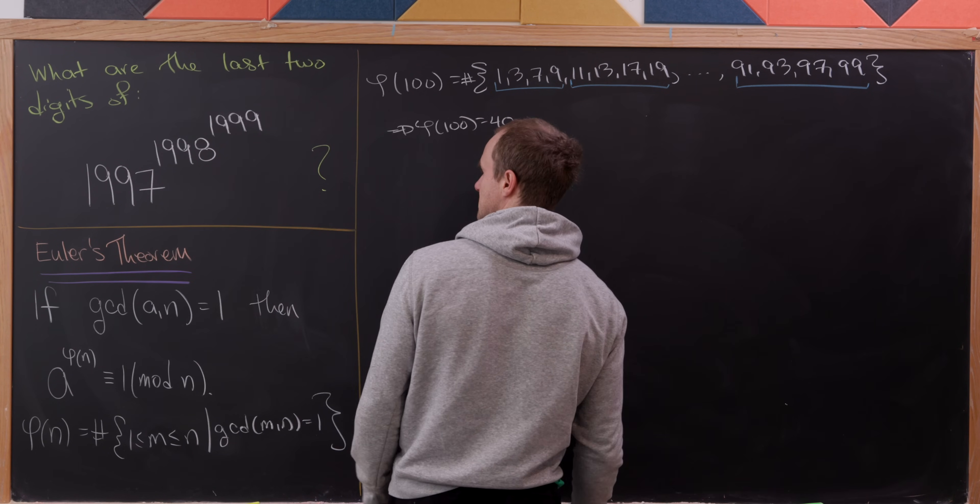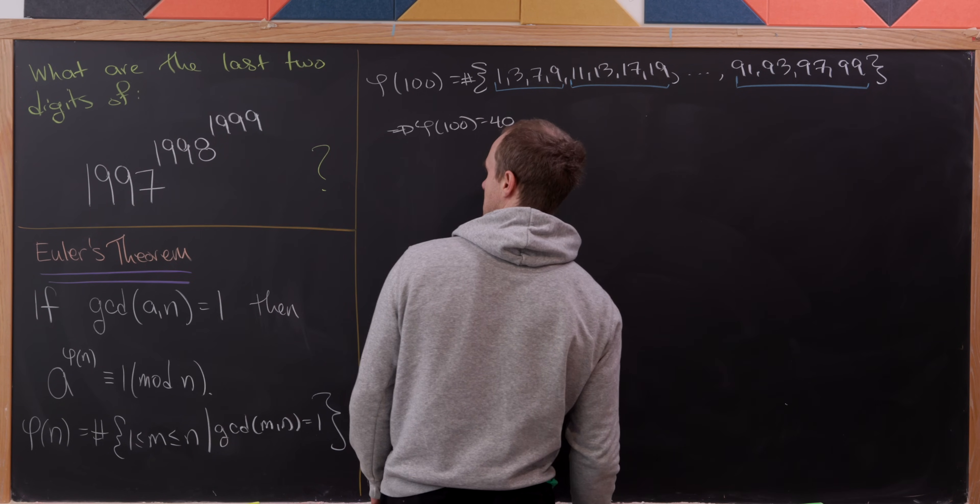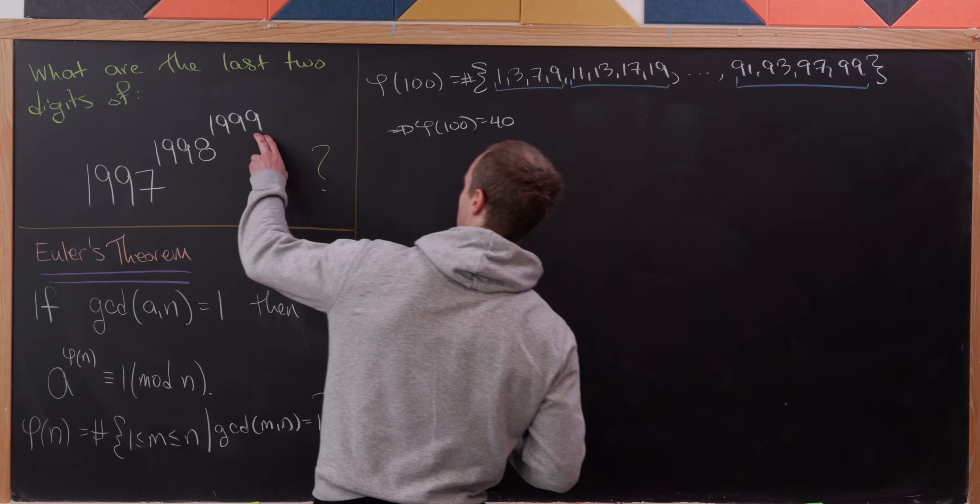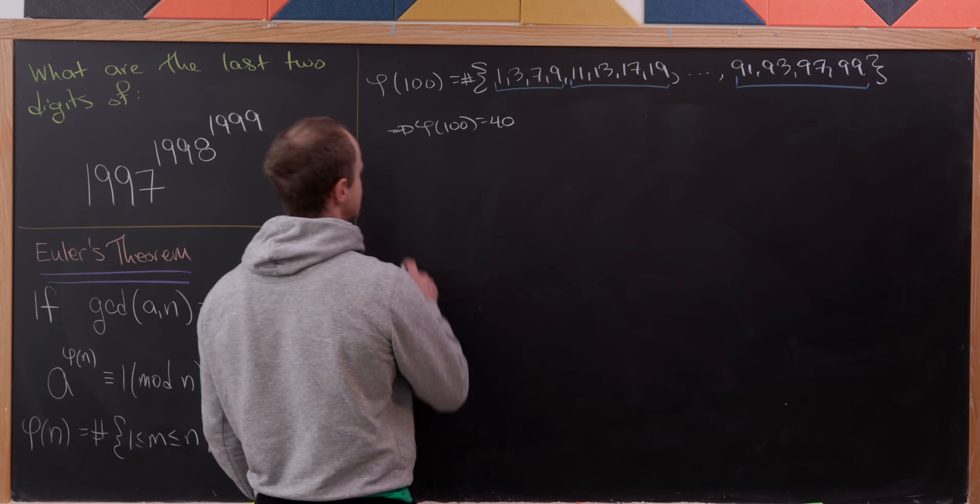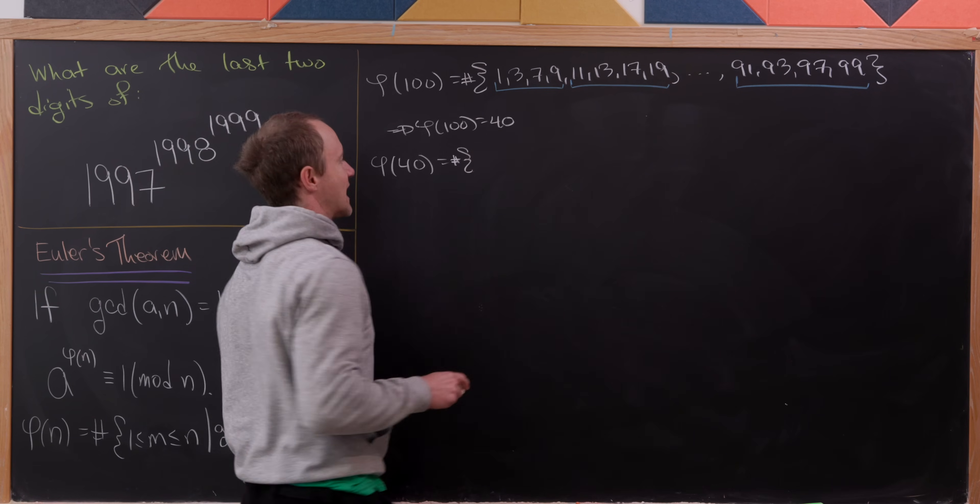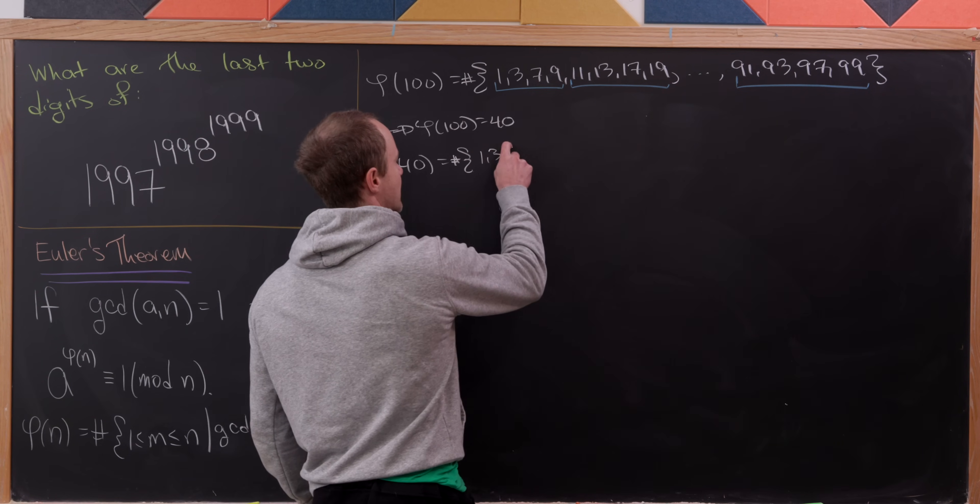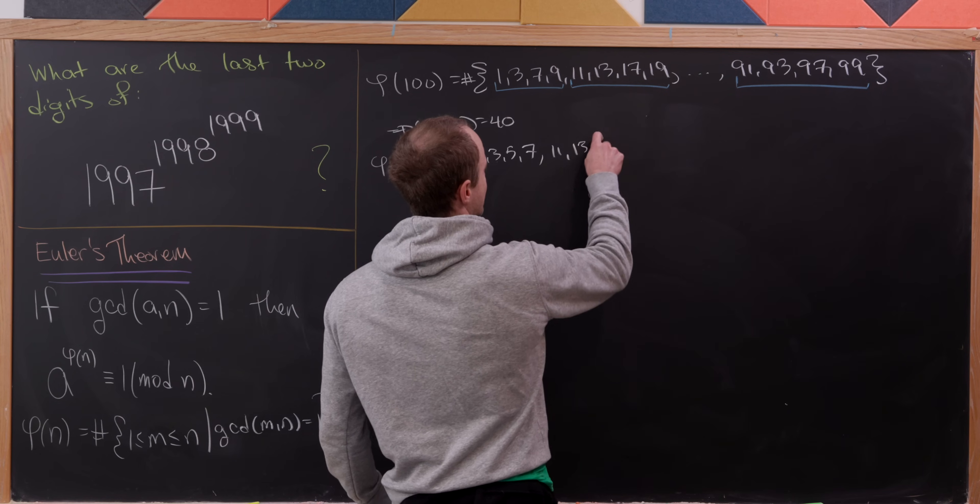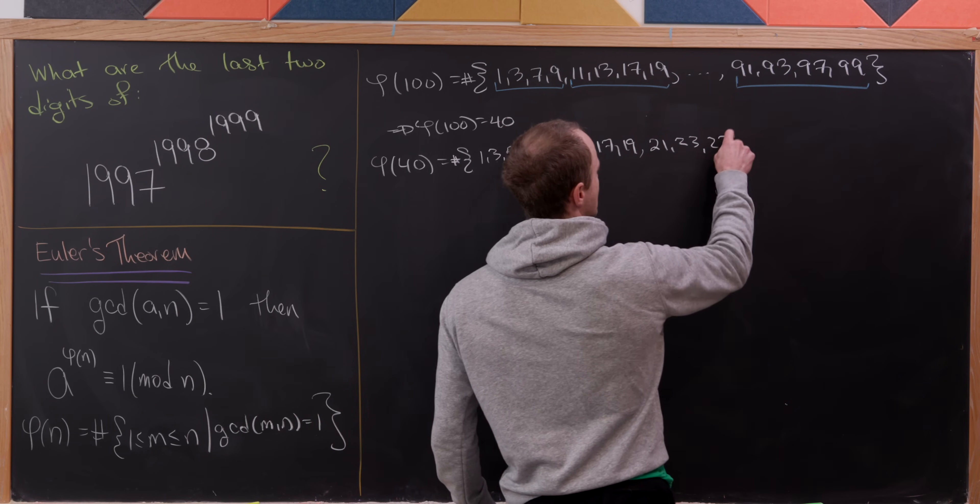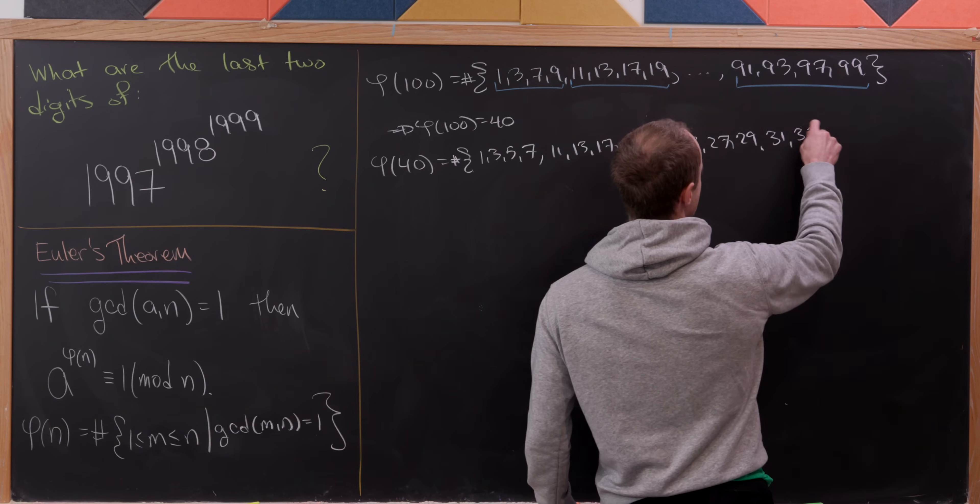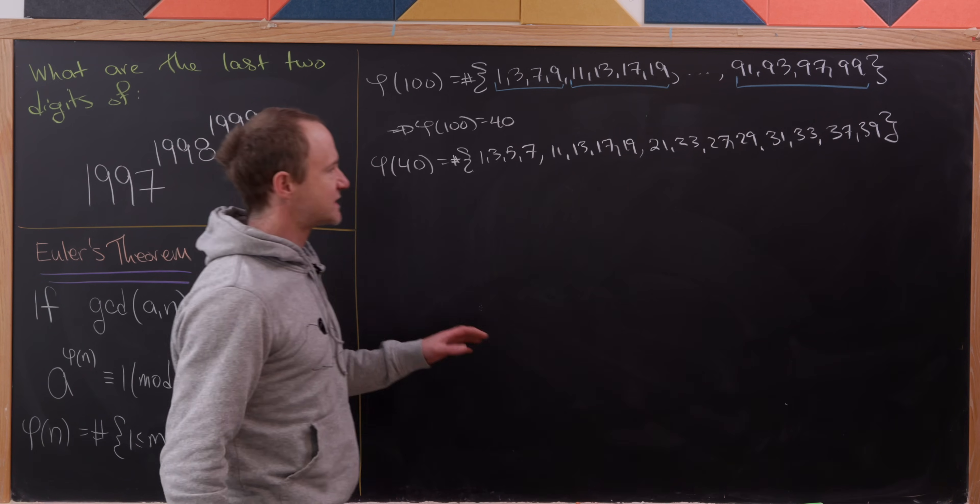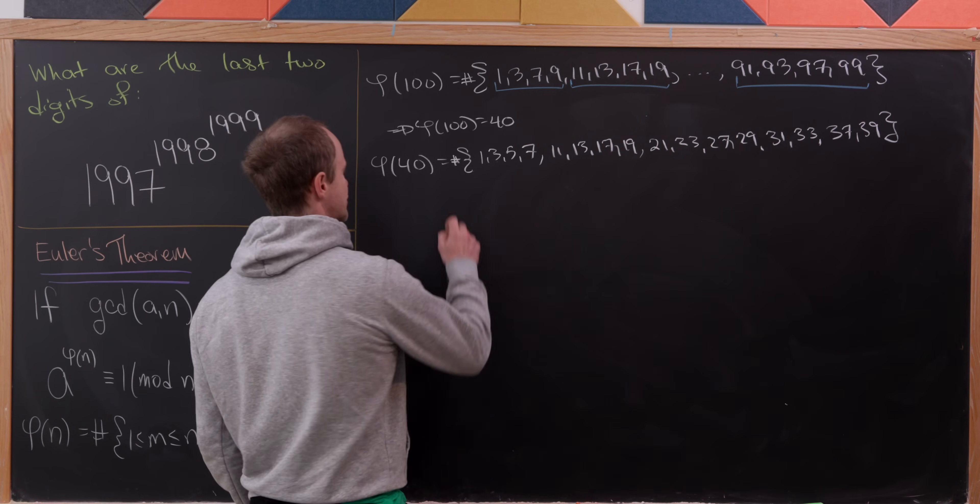That means we're going to reduce this number 1998 modulo 40. Now we need to know φ(40) because that's how we'll reduce this number 1999. But that's also straightforward because it has the same prime factors as 100. So we've got 1, 3, 7, 11, 13, 17, 19, and we can list them all out pretty easily. The last grouping would be 31, 33, 37, and 39. Counting all of those up, we see that equals 16.